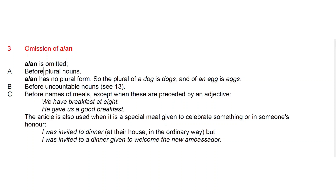We also omit A or AN for uncountable nouns and before names of meals, except when these are preceded by an adjective. For example, 'we have breakfast at eight' is different from 'he gave us a good breakfast'. In the second example, a specific breakfast is named — a good breakfast — whereas 'we have breakfast at eight' is more general.